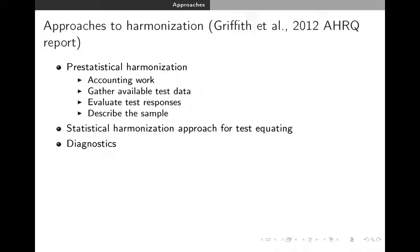Now I'll talk about approaches to harmonization from an AHRQ report from 2012. They talked about pre-statistical harmonization — that's the accounting work, the part that takes the most time. You're gathering available test data, evaluating test responses, and describing your samples. In Rich's Pitch Project R01 — psychometric integrative technologies — our goal is to bring together datasets from the Health and Retirement Study and all its international sister studies. It took us about two years just to get all the data and get a handle on what's going on across all these datasets. After pre-statistical harmonization, you apply a tool to equate your construct across studies, and then you perform diagnostics and checks.